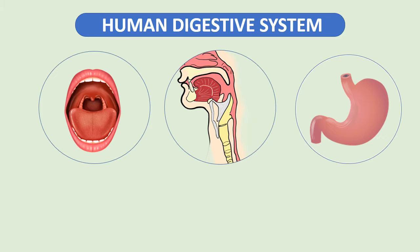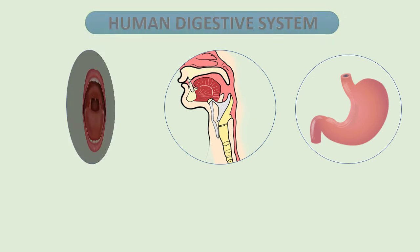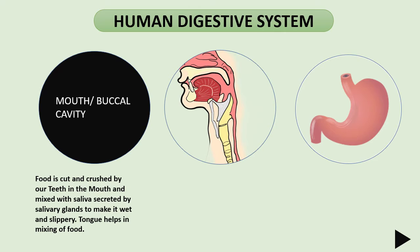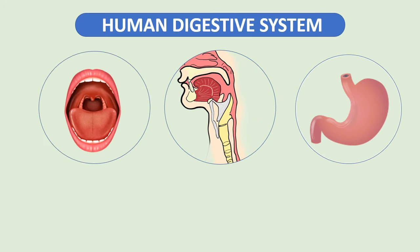The mouth is the beginning of the digestive tract. Food is cut and crushed by four types of teeth in the mouth and mixed with saliva secreted by salivary glands to make it wet and slippery. The tongue helps in mixing of food.